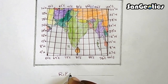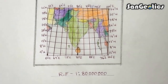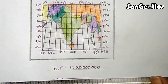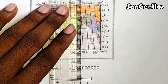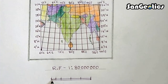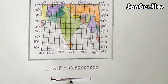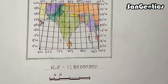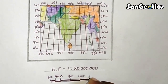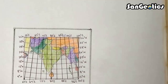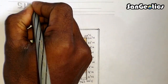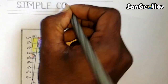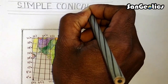Put the scale at the bottom as an RF scale, and you can also add a graphical scale. Give a suitable title at the top: 'Simple Conical Projection with One Standard Parallel.'